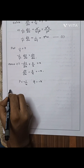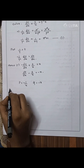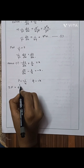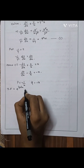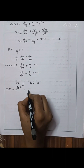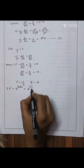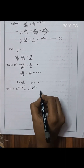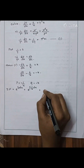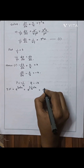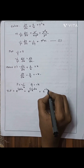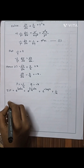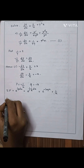Now we proceed with finding the solution of the linear equation. First we find the integrating factor: e^(∫P dx) = e^(∫−1/x dx) = e^(−log x) = 1/x.